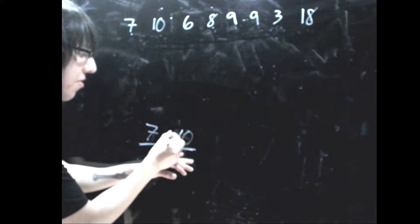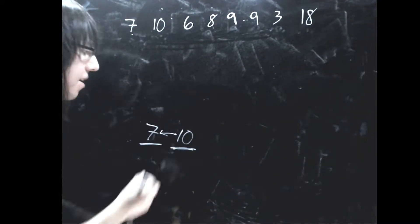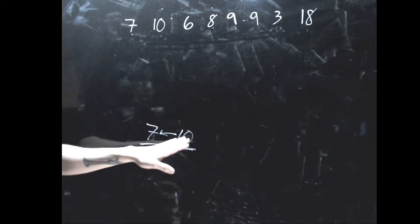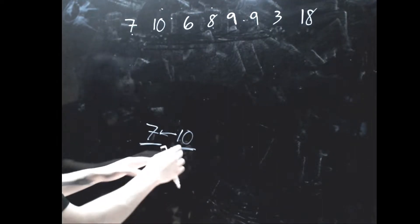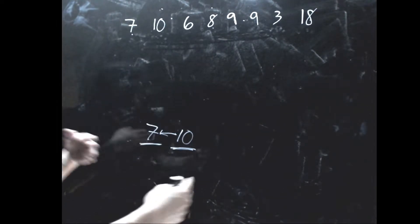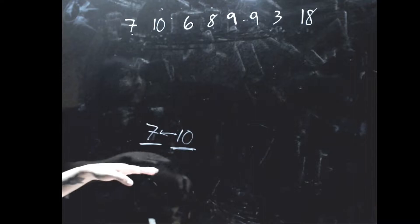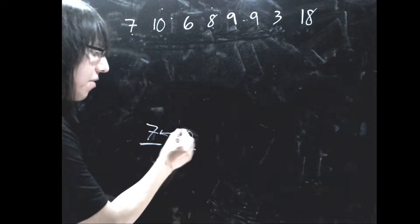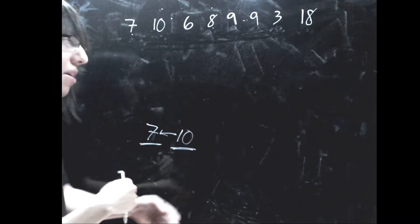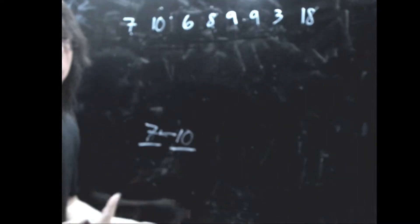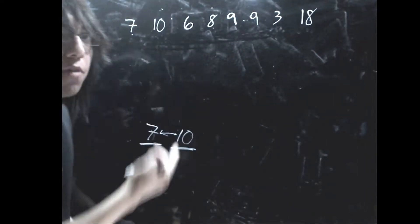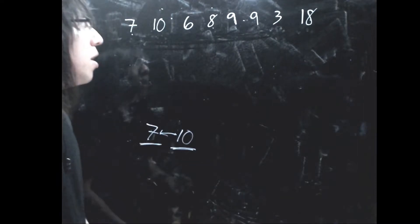I'm going to draw an edge from 10 to 7. This means that this is my current longest increasing subsequence — the edges are technically backwards, but if we traverse them from 10 to 7 and then do the reverse, that would be our longest increasing subsequence. So 7 and 10 so far is our longest increasing subsequence.